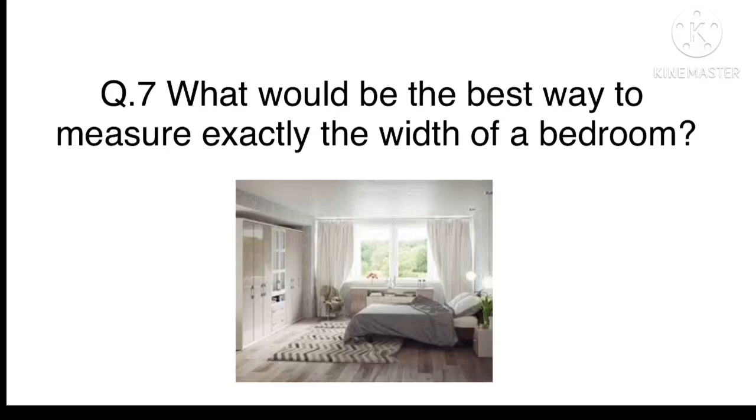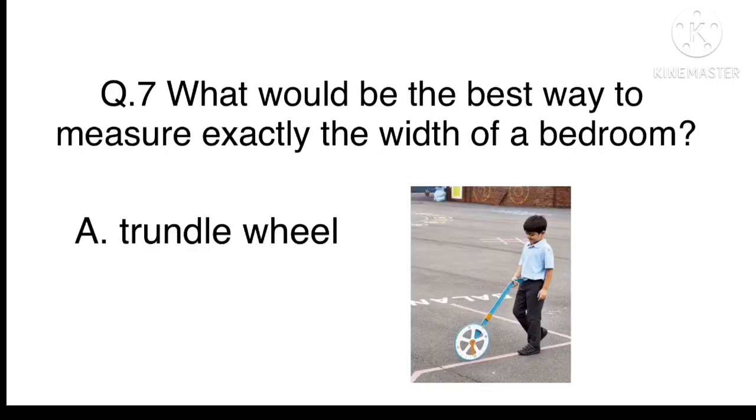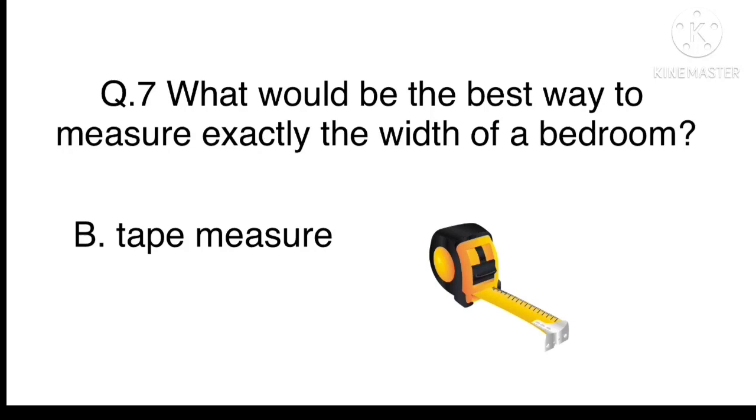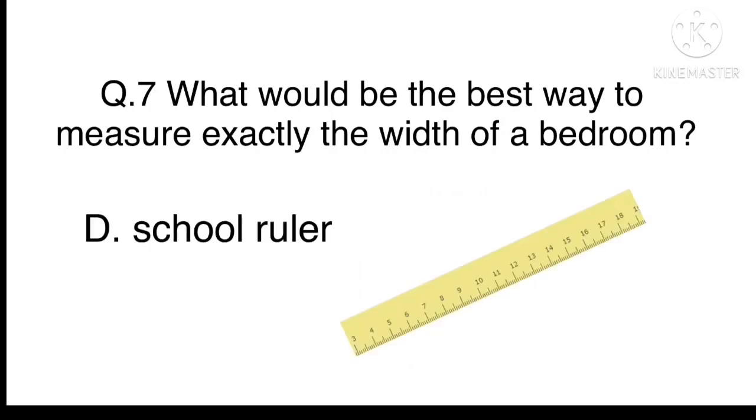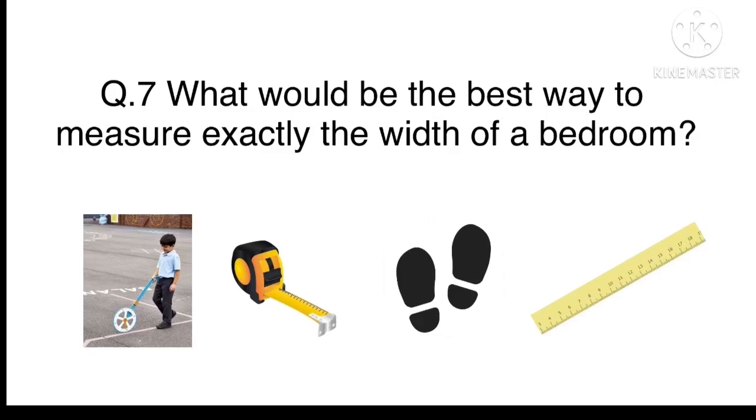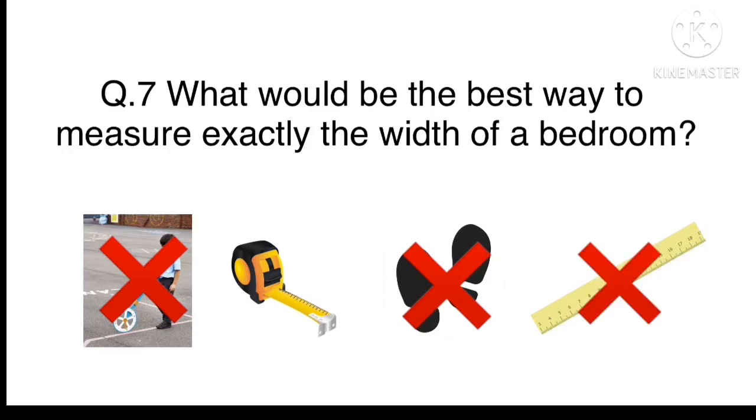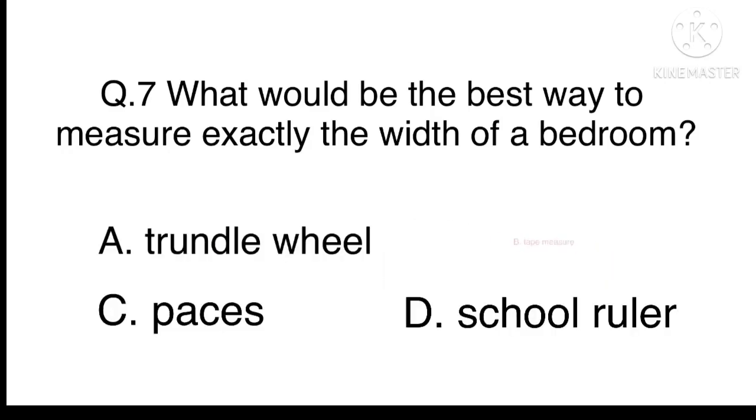Question 7. What would be the best way to measure exactly the width of a bedroom? The best way to measure the width of a bedroom would be to use a tape measure. Trundle wheels and paces would not be accurate. A classroom ruler would involve many small measurements. The answer is B. Tape measure